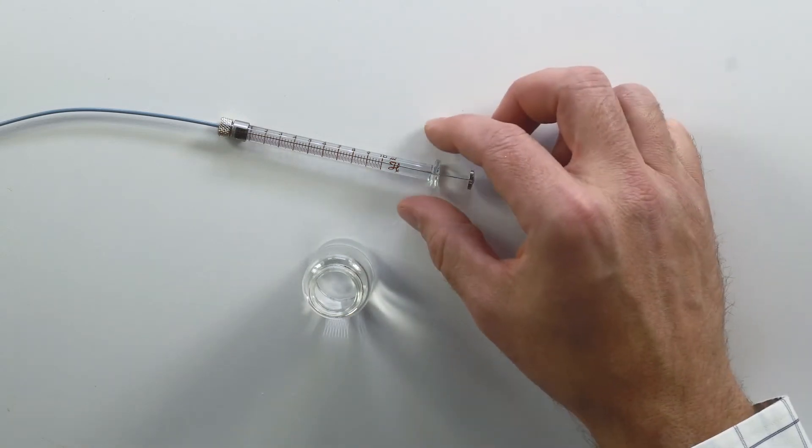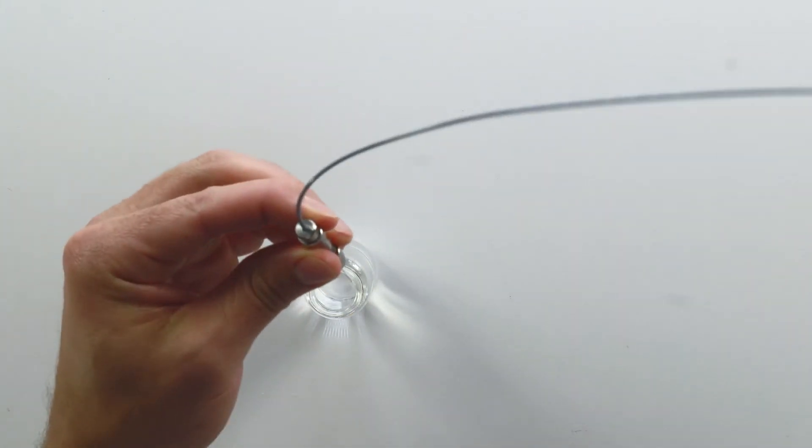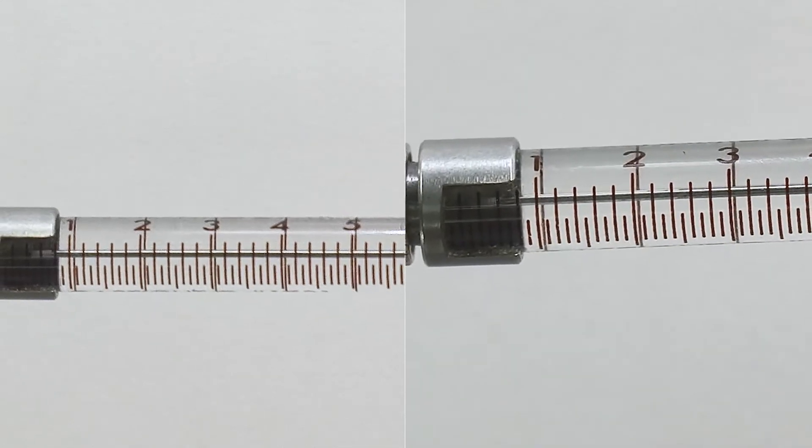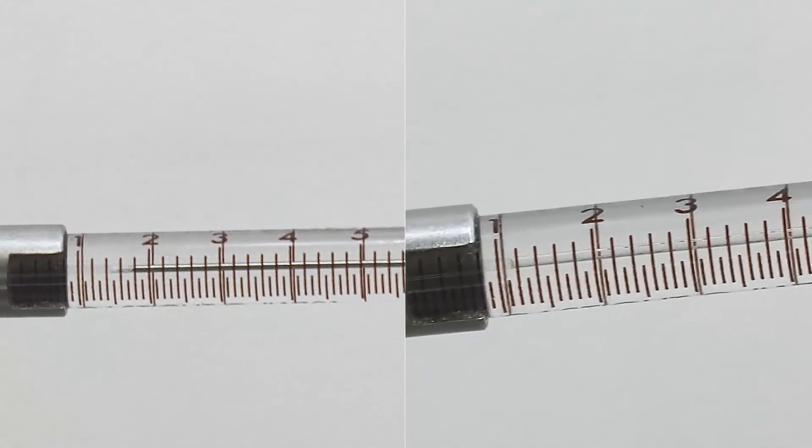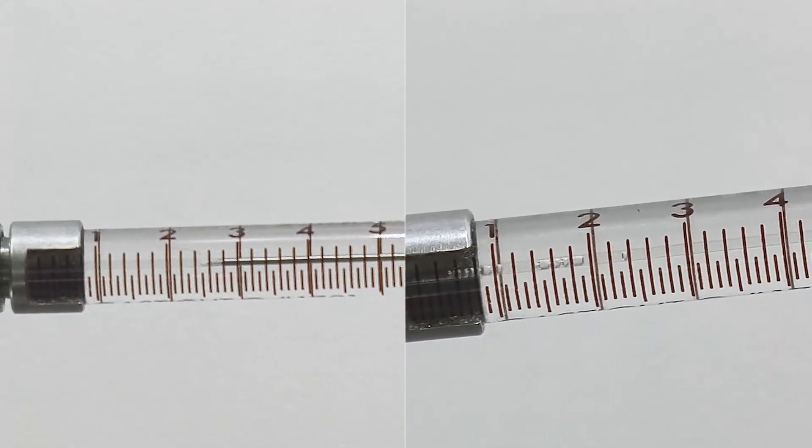Aqueous solutions for injection are aspirated into the needle by slowly pulling back on the plunger. Note that pulling back on the plunger too rapidly can result in unwanted air bubbles in the system.